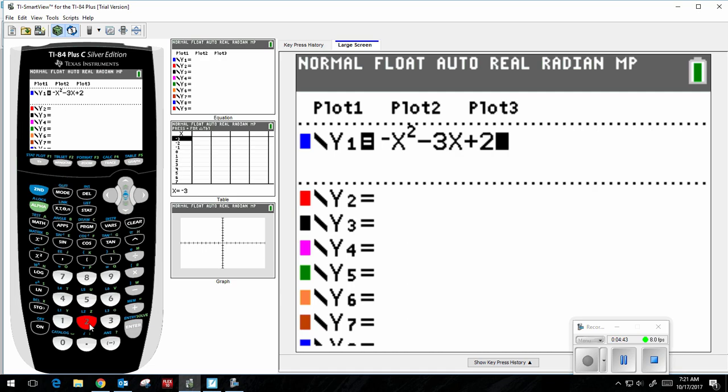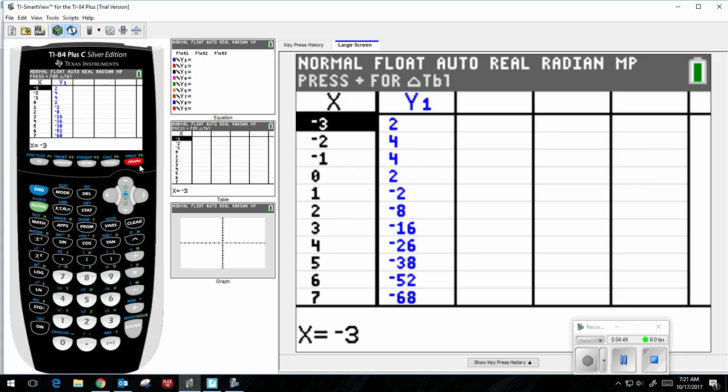And now I can go to my table by hitting second graph, and you see a table of values. Well, this table of values, if you copy it down, is just like when we did the example from a table.